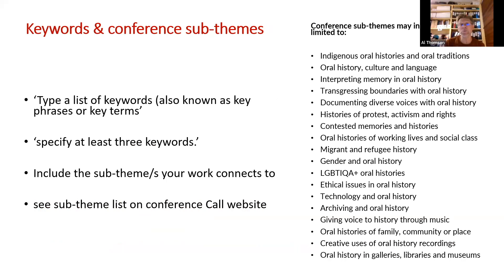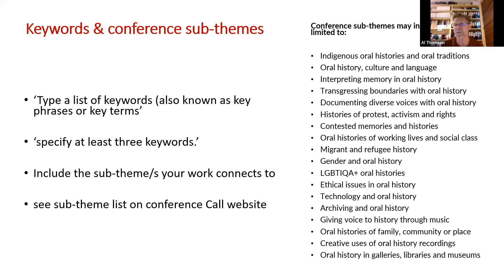On keywords: it asks you to put in a few keywords. One suggestion is to have a look at the conference subthemes on the website. If your presentation links to one or a couple of those, you could just use that subtheme as a keyword — that'll help us when putting together the program. You could also add one or two other keywords to give us an idea, such as whether it's about local history, museums and oral history, and so on. Just put each one on a separate line; the instructions are on the site.